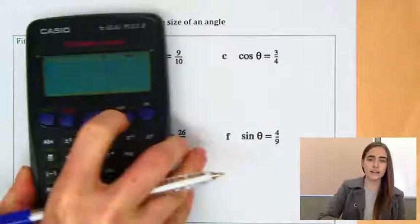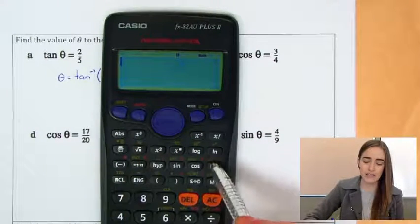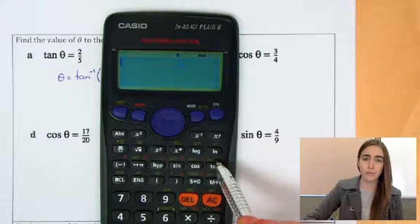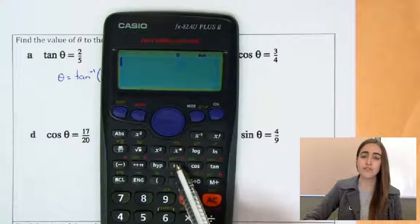So on your calculators, just above where you've got your tan button, it says tan inverse, so it's got that tan with a little minus 1. Same above the cos button, you've got cos inverse, and above sine, you've got sine inverse.